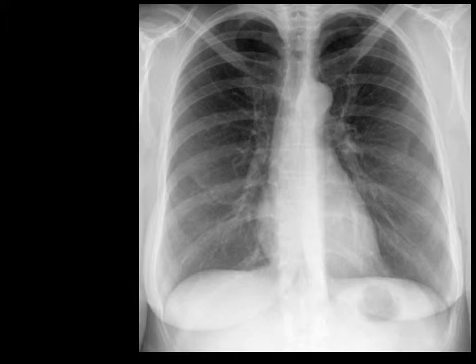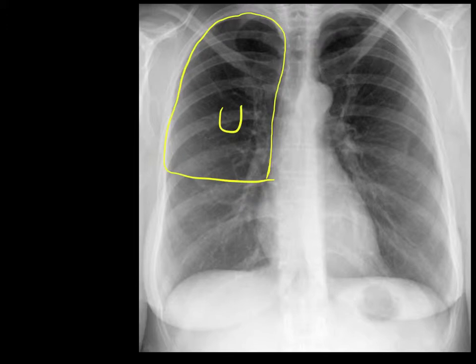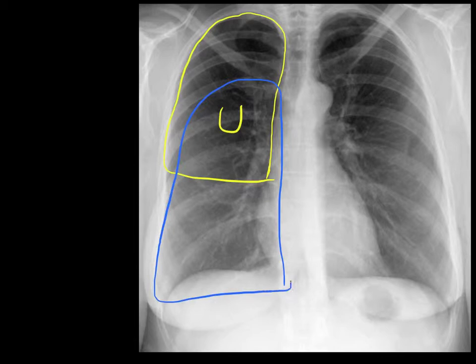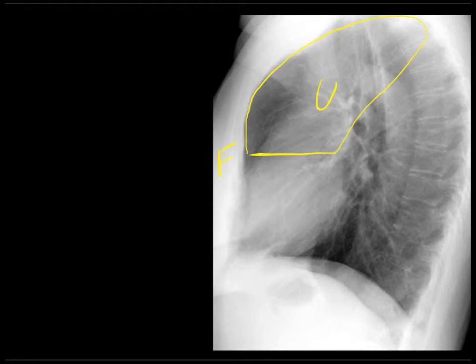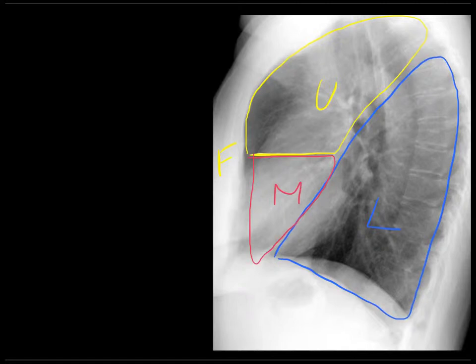Now let's turn our attention to the right lung. The right lung has three lobes — it also has an upper lobe here. It has a lower lobe, but in addition it has a middle lobe that overlies the other two lobes, sitting somewhere in here, butting up against the right heart border. On the lateral chest X-ray, looking from the patient's side, the upper lobe is again anteriorly, closer to the front, and a little smaller than on the left. The lower lobe is posteriorly, and the right middle lobe fits in like a little triangle overlying the heart between the two.